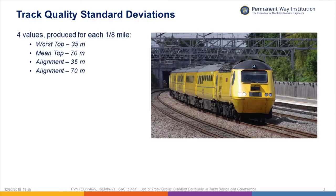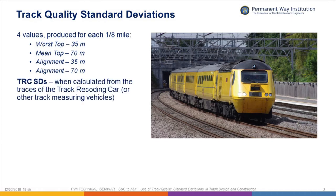So what do we mean by track quality standard deviations? We mean the four values produced for each eighth mile by the track recording car — worst top 35, mean top 70 metre, and alignment 35 and 70 metre. I'm going to refer to these collectively as TRC SDs. It's a lot of ground to cover and it would probably take a half-day workshop to cover it all fully, so I'm going to whisk through it. What you might go away with is an understanding that what you thought the SDs represented isn't quite the case, and that you can't necessarily use them in the way you have been using them.